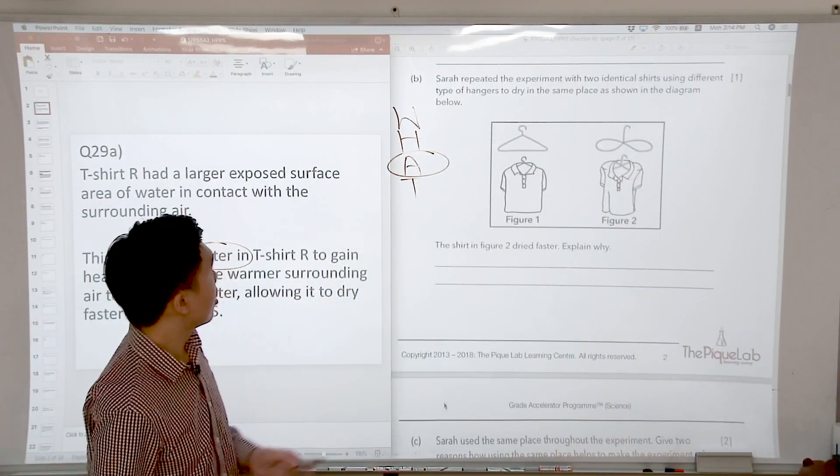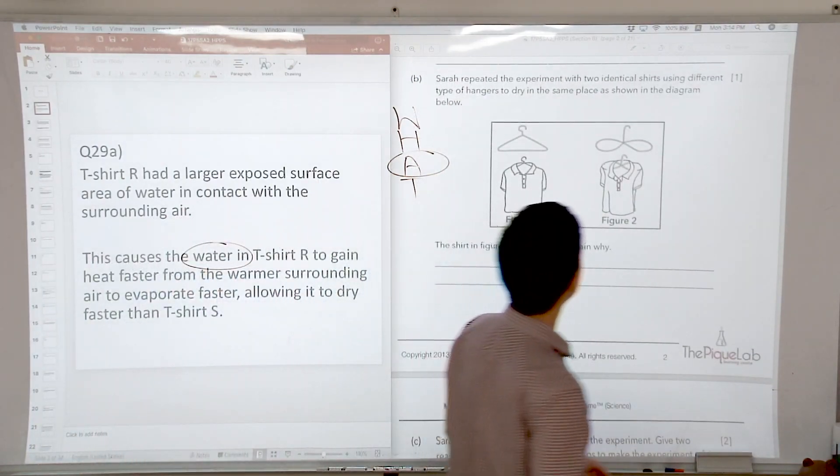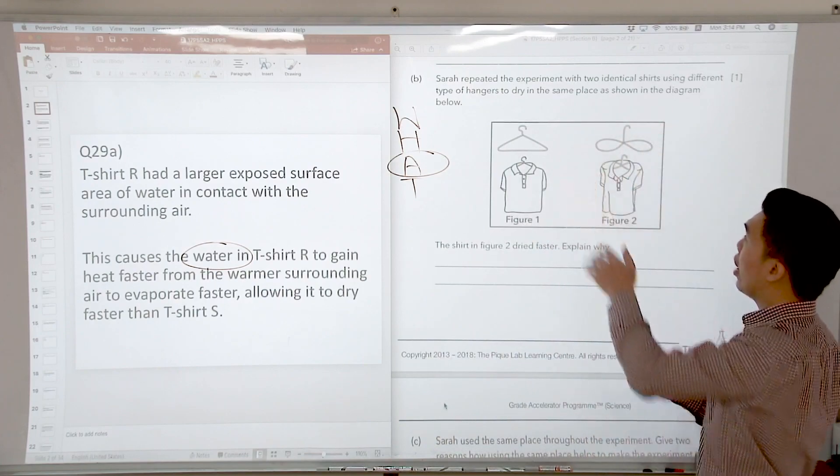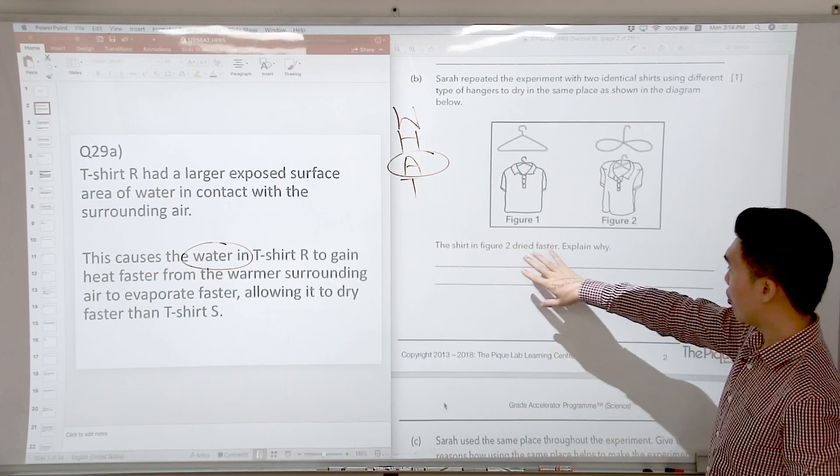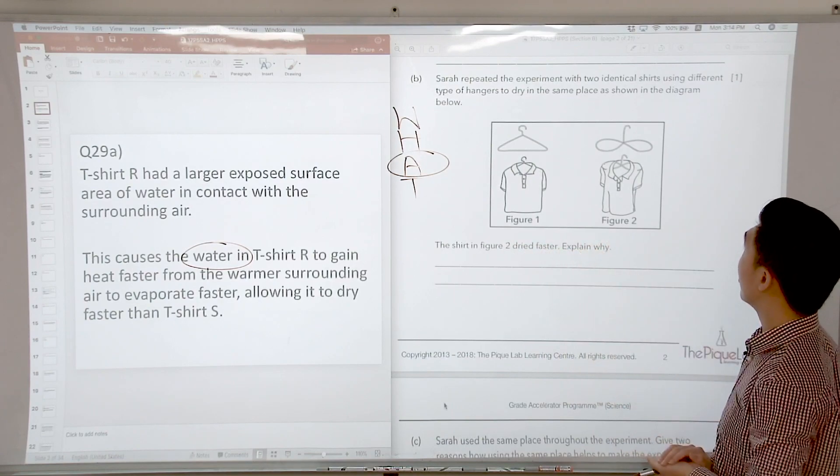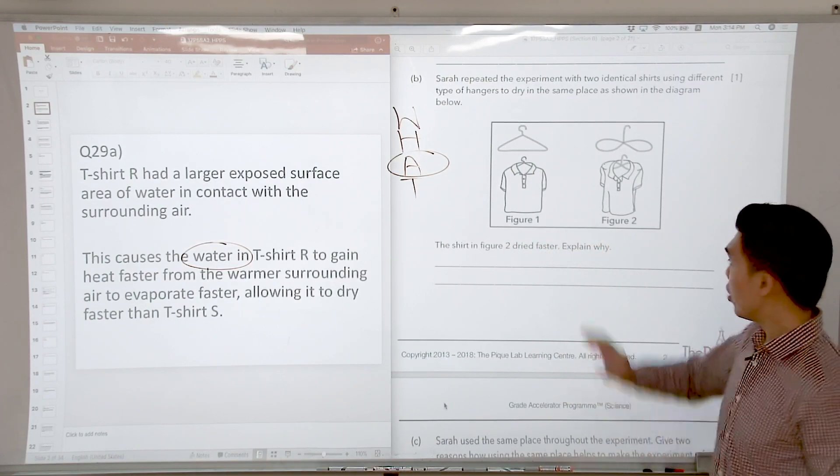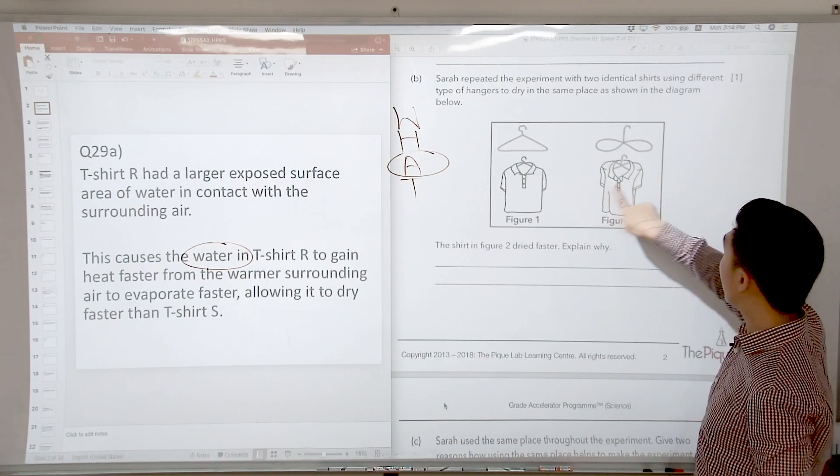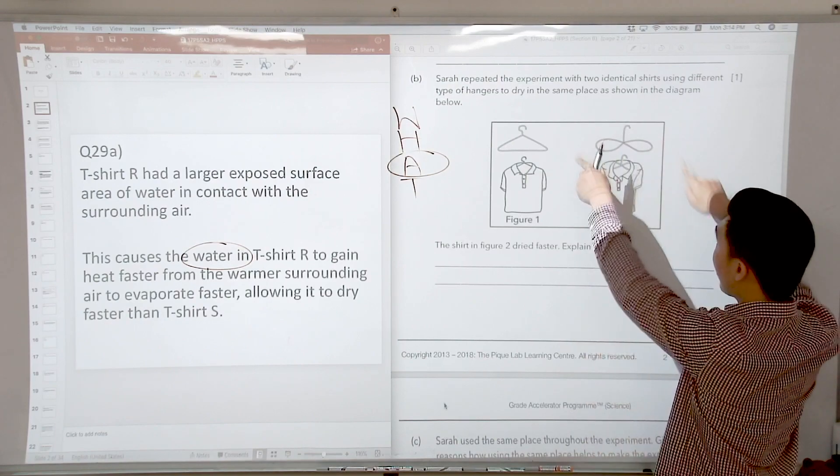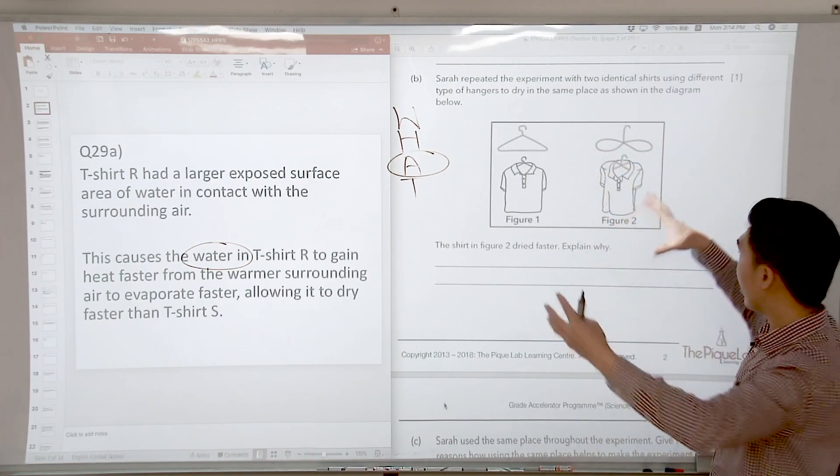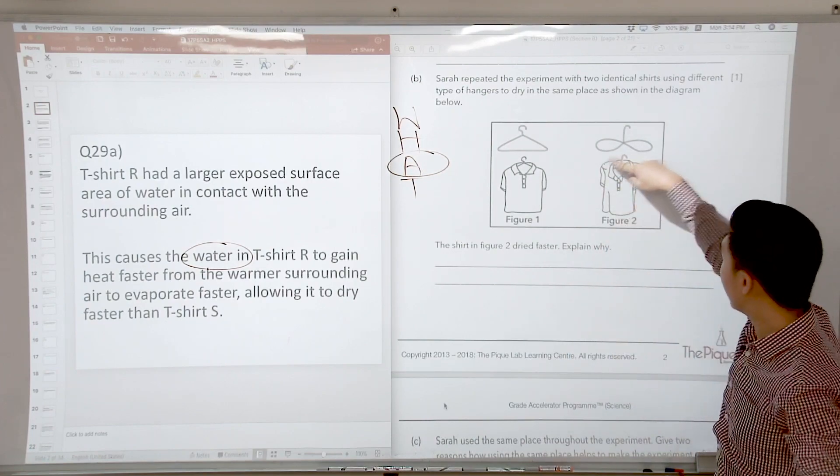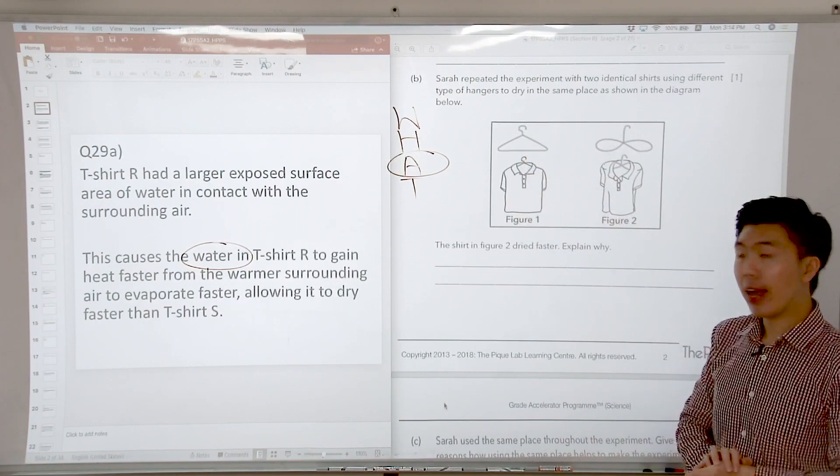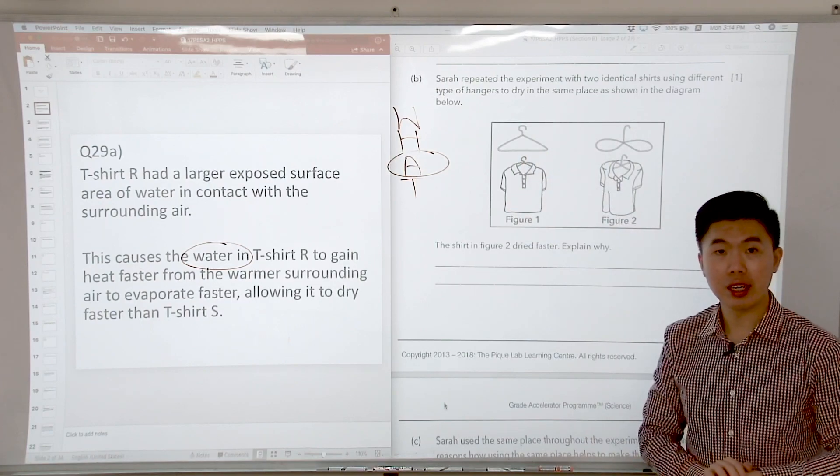Let's go on to part B of the question. Sarah repeated the experiment with two identical T-shirts using different types of hangers. The shirt in figure 2 dried faster. What is the reason for that? If you look at the hanger in figure 2, this hanger with the figure 8 actually creates more airspace within this T-shirt itself as compared to figure 1.